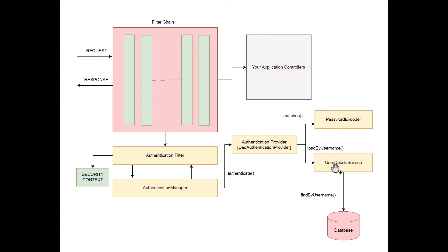The UserDetailsService is called by the Authentication Provider to load the user details. It can call methods like loadByUsername, and it will load details such as username, password, and what roles the user has in the system. It loads this information from a data source — for example, a database. It returns this information as a UserDetails object, which includes everything the system needs to know about the user: stored password, roles, and so on.